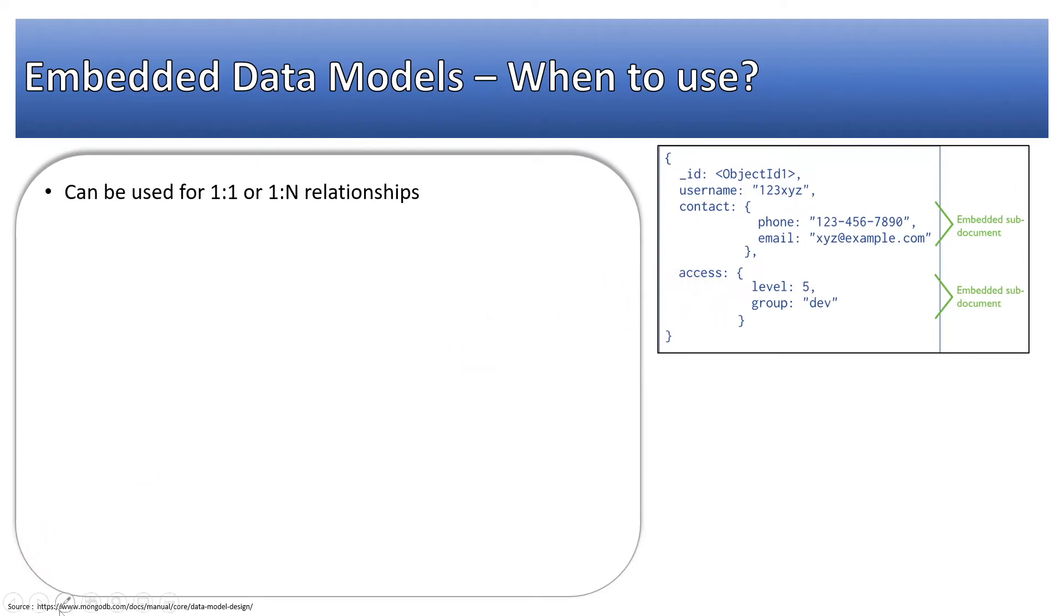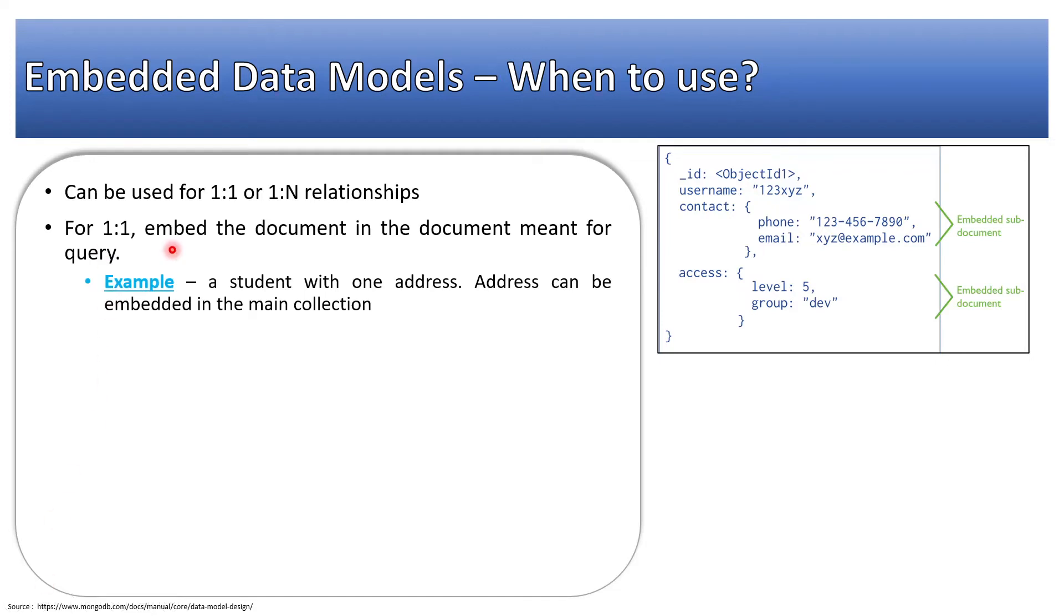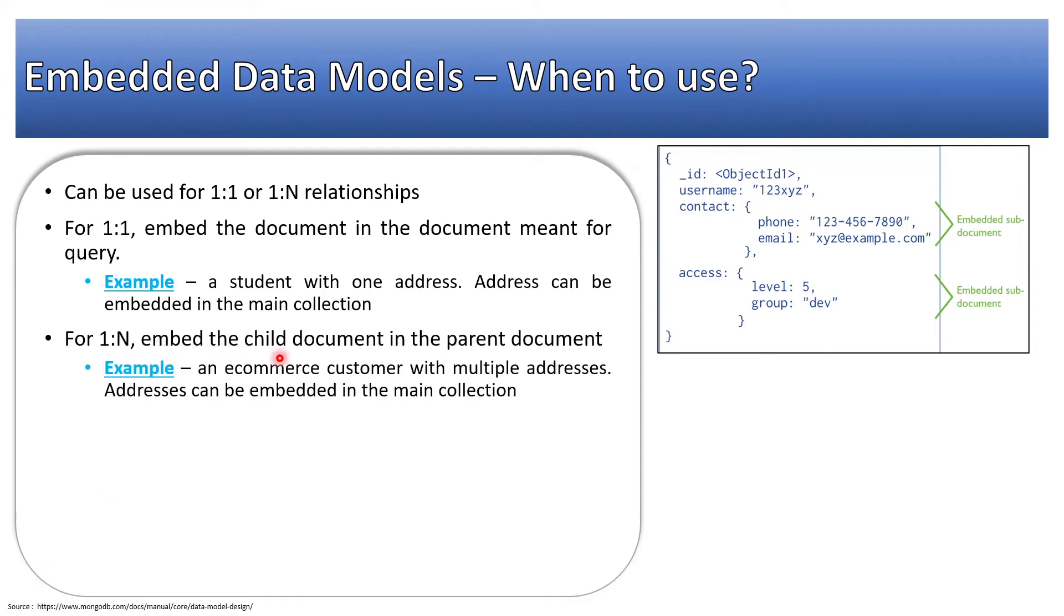Use embedded data model for one-to-one. Embed the document in the document meant for query. For example, a student with one address. Address can be embedded into the main collection. It should not be the other way. In case of one-to-many, embed the child document in the parent document.